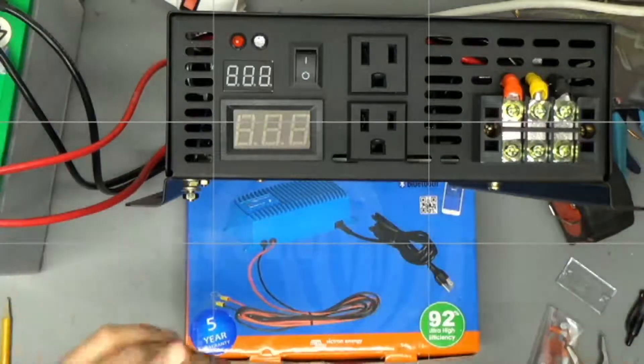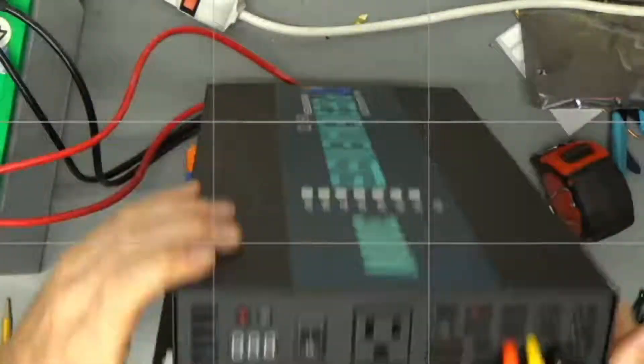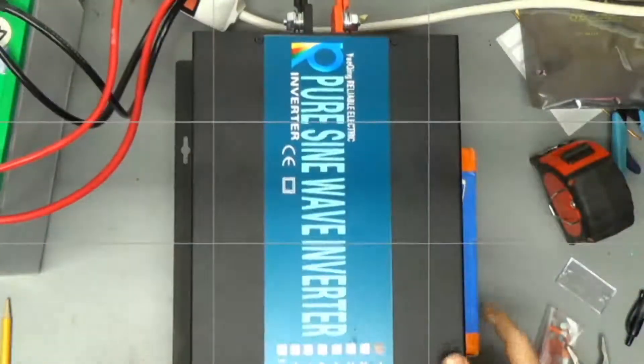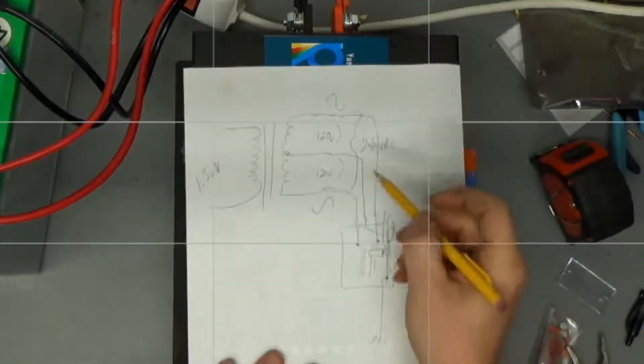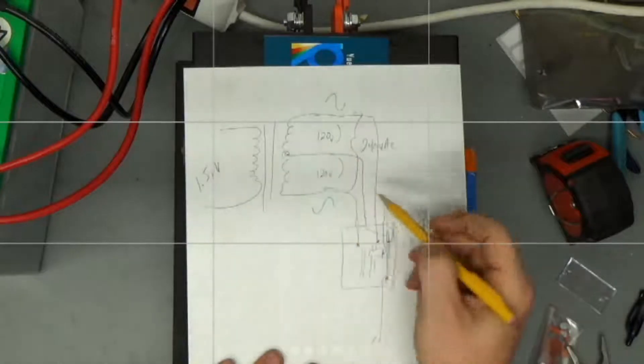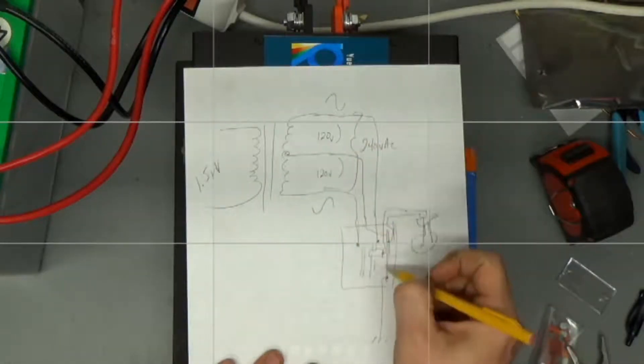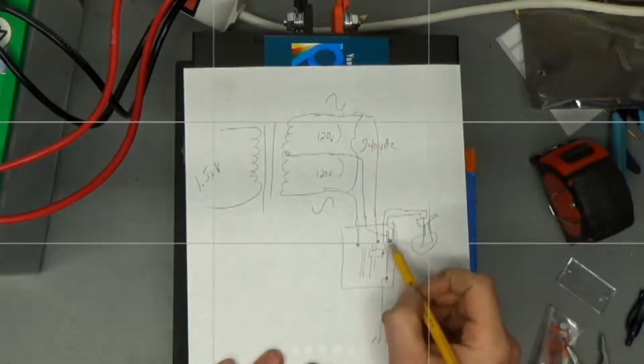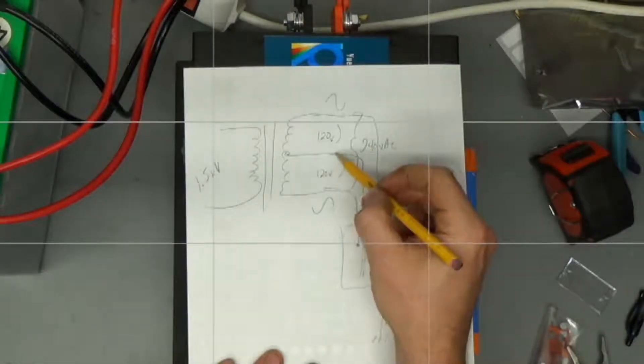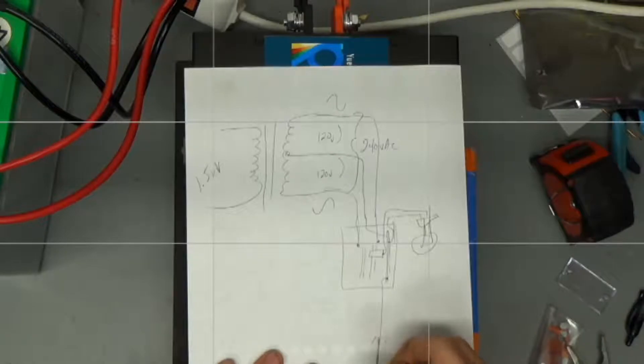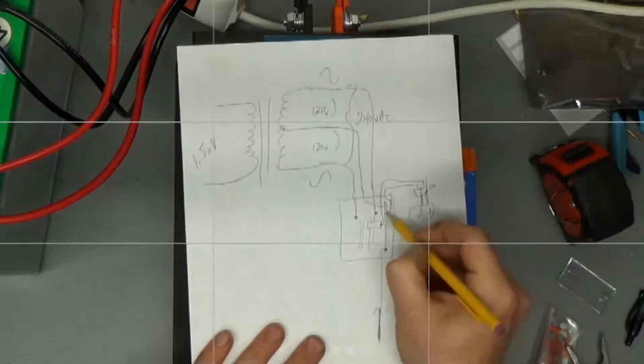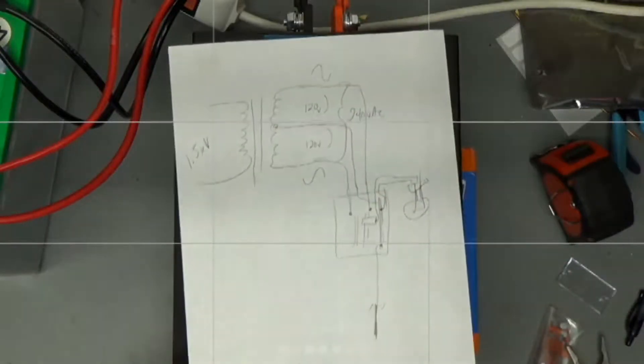But the problem comes when you try to hook one of these things into your electrical panel box because as we discussed before, when your service gets terminated here at your panel box, the neutral from the transformer outside and the ground, the ground rod outside of your house are bonded together on this bus bar.